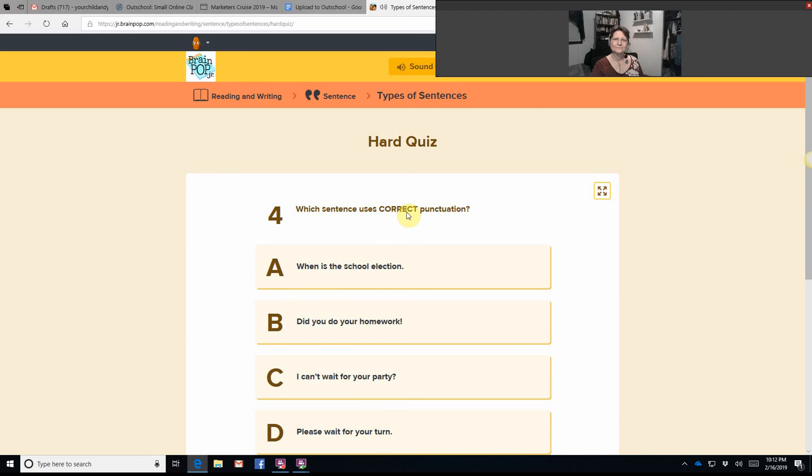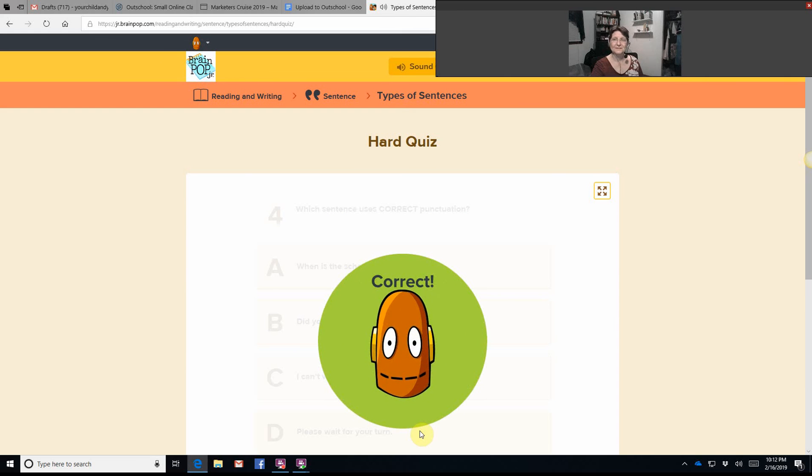Which sentence uses correct punctuation? When is the school election? Did you do your homework? I can't wait for your party. Please wait for your turn. I hope you said D. It's a command.